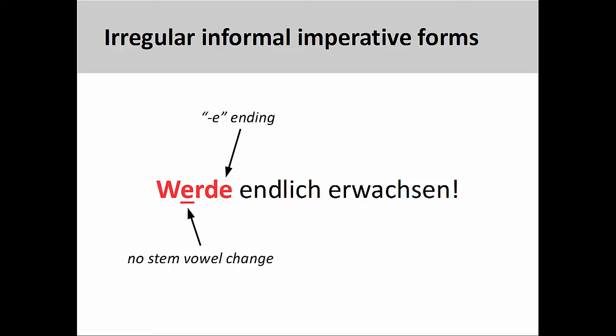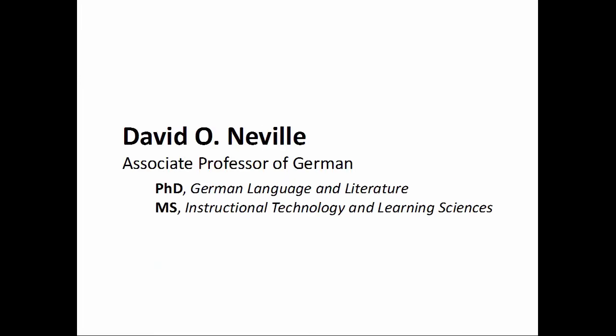Since the verb stem of werden ends in a -d, however, we do need to add an -e to the form.